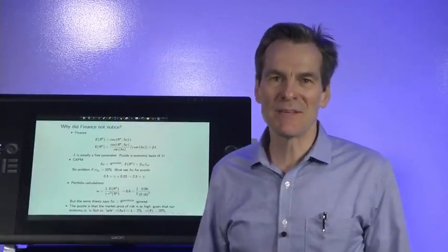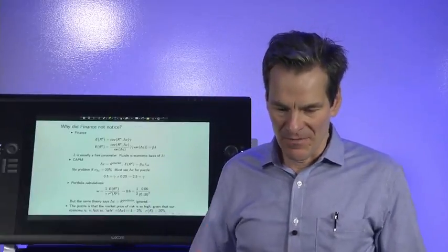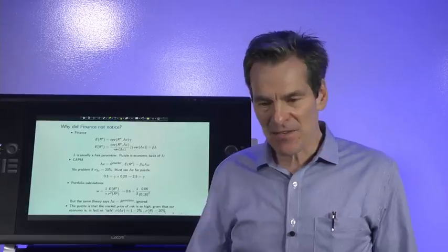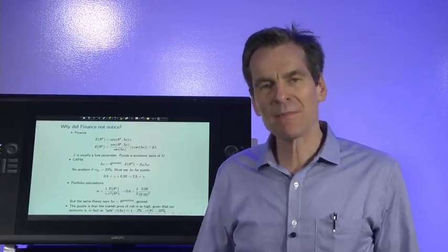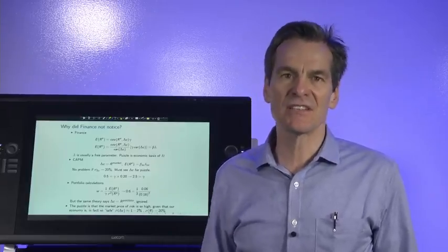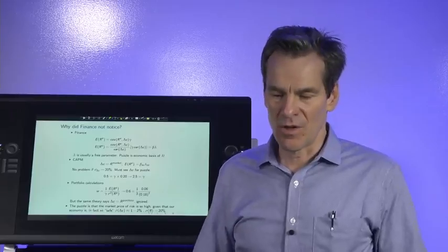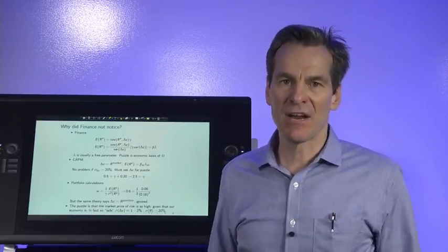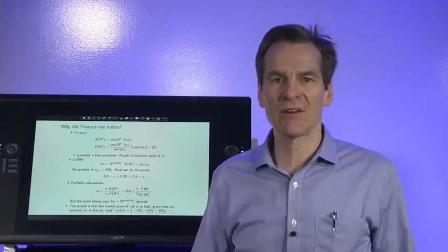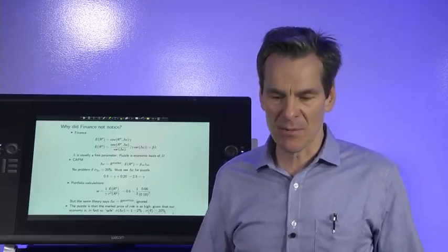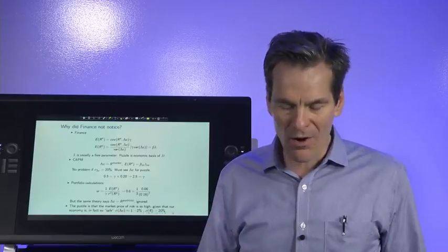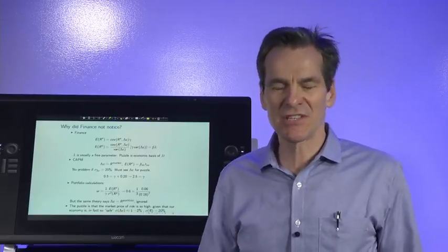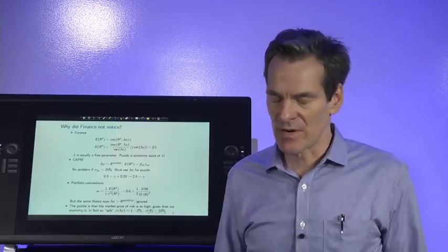So the equity premium puzzle looks like a pretty big problem deep at the heart of our model. And in fact, we'll use that as the springboard for looking at modifications of the consumption-based model that will hopefully work better and give us a better tie of macroeconomics to finance. We can see those correlations of finance and macroeconomics. We just need models to help us understand what's going on. Why are people so scared of stocks, especially in recessions and less so in booms?